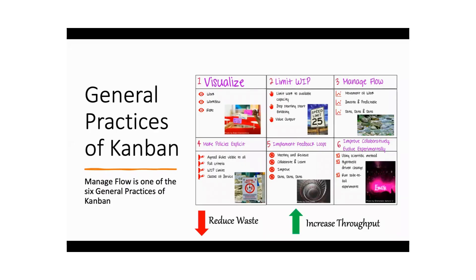Let's look at the six general practices of Kanban — I'll give you a bird's eye view. Manage flow is one of them, and it's the third one. The first three general practices generally help you to manage your flow, making it smooth and predictable. The last two practices will help you review and improve your flow.